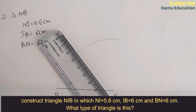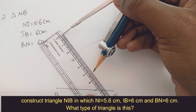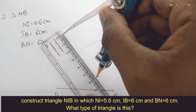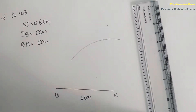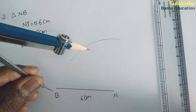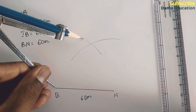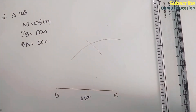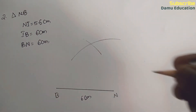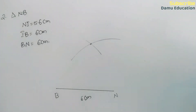Next, we need to draw IB with 6 centimeters. B as a center with 6 centimeters — B as a center, we are going to draw IB. Where the two arcs coincide, you need to take that point as I.